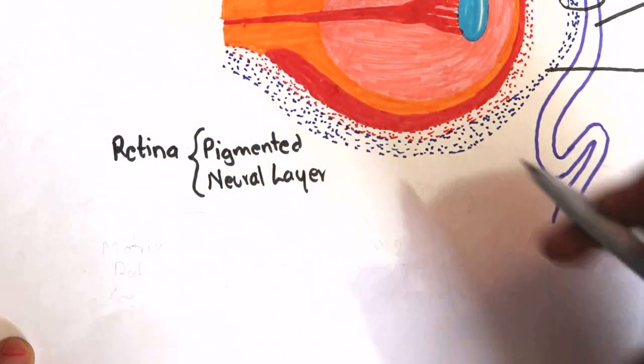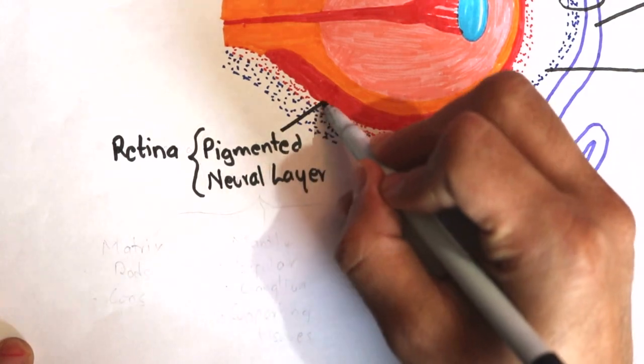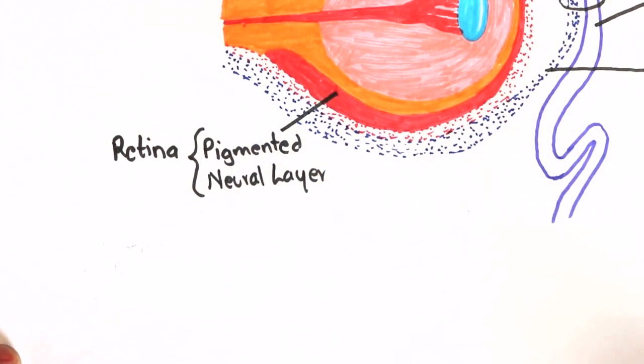The pigmented layer is derived from the outer wall of the optic cup, colored in red here. Cells of the outer wall of the optic cup become pigmented. Its posterior part forms the pigmented epithelium of the retina, and the anterior part continues forward in the ciliary body and iris as their anterior pigmented epithelium.